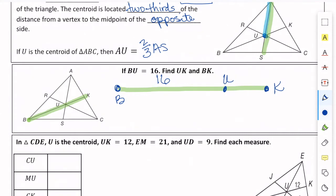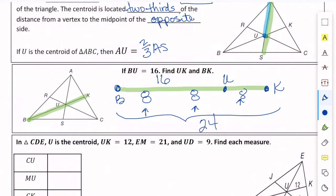So 16 is two-thirds of something. If 16 is two-thirds, we can cut that in half to find one-third. Half of 16 is 8. So this 16 is actually two pieces of 8 — that's one-third, another third, and then the final third is another 8. So UK is 8. Then we just add those 8s together: 8 plus 8 plus 8 is 24. So UK is 8 and BK is 24.